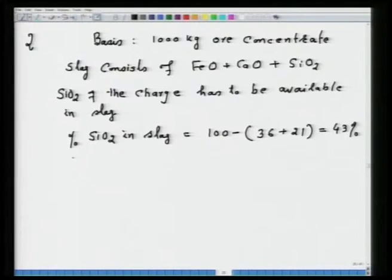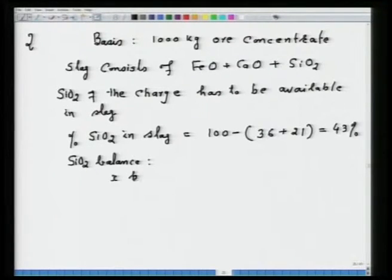Once we know the SiO₂ percent, we perform a SiO₂ balance. Let x kg be the weight of slag. The chemistry of matte smelting is important to understand — you must know how slag forms and what it consists of. The slag can have FeO, CaO, and SiO₂, and that is the clue to solving this problem.